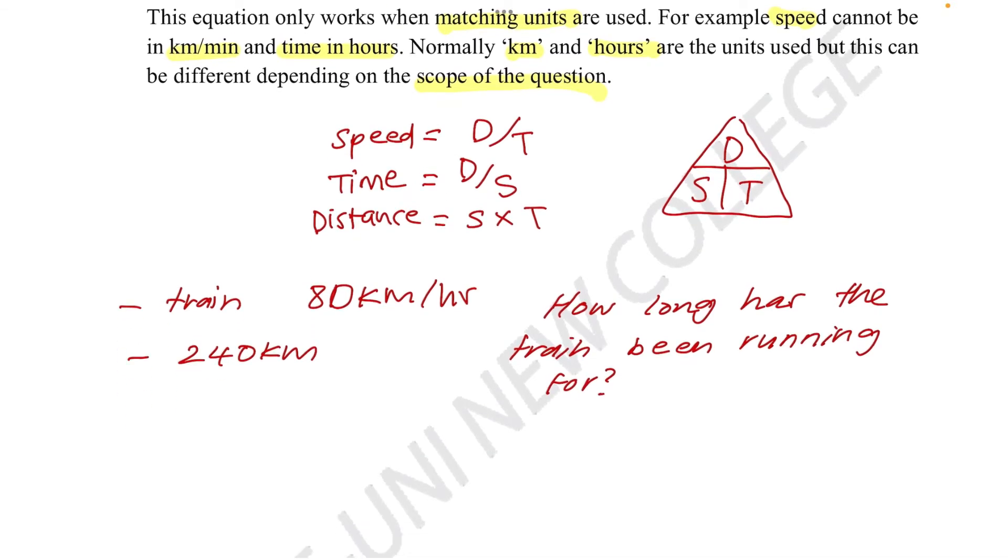So to do this, we first need to figure out what we're looking at. Are we looking for time, distance, or speed? We know how long has the train been running for, in this case will be time. So we'll be using the distance over speed formula. We know the speed is 80 kilometers an hour and the distance it's traveled so far is 240.